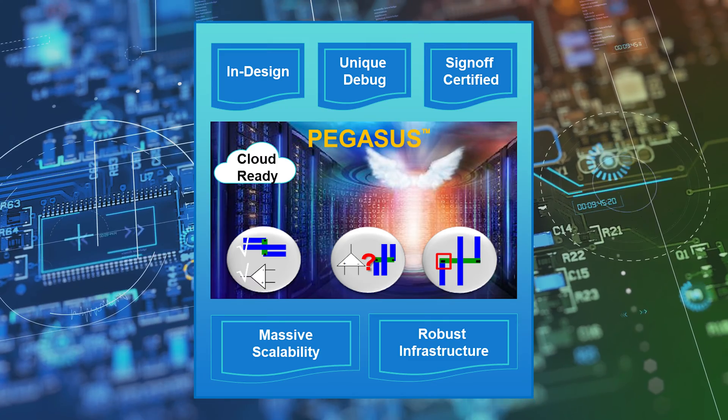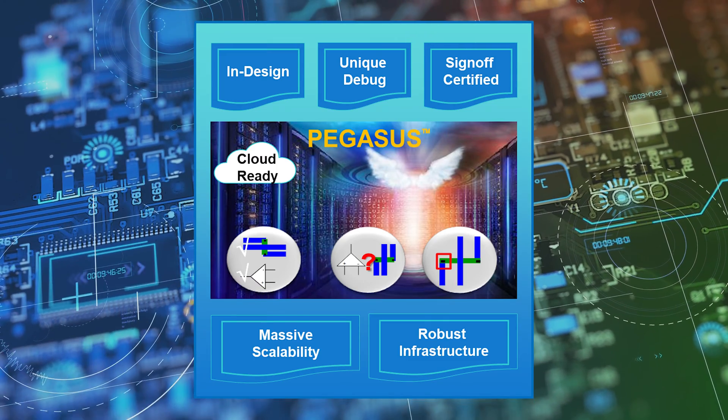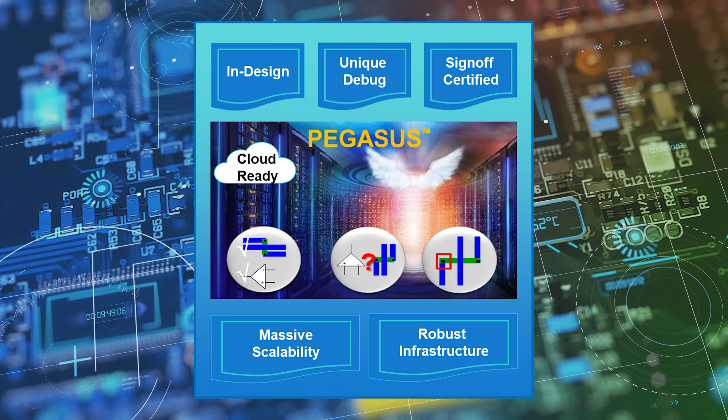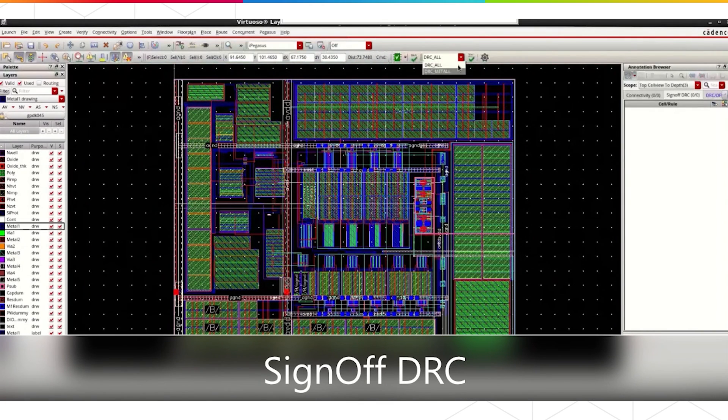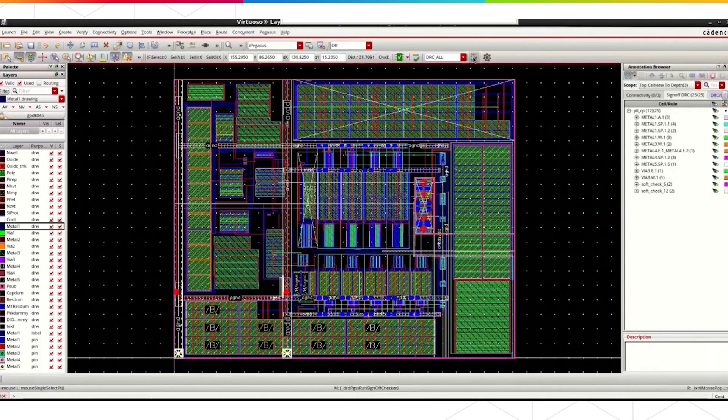A second example is around enabling faster design closure. Getting a DRC and LVS clean layout is a requirement for design closure, and the ability to address DRC and LVS concerns during the design process will reduce churn cost at the end of the layout cycle. Virtuoso Studio reimagines a tight integration of the Cadence Pegasus verification system, our foundry-certified physical verification platform. Now you can get sign-off quality design rule checks in your layout during layout construction. The in-design DRC interface is designed to be extremely fast and sign-off accurate, running on a portion of your design or a subset of rules while staying in your familiar Virtuoso environment.